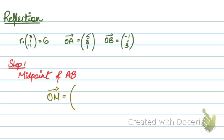5 plus minus 1, 4, 4 upon 2, I get 2. Then 3 plus 1, 4 upon 2, again I get 2. And then 1 plus 3, 4 upon 2, 2. So my midpoint of the points A and B is 2, 2, 2. That's step one.